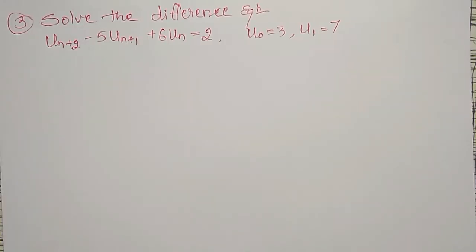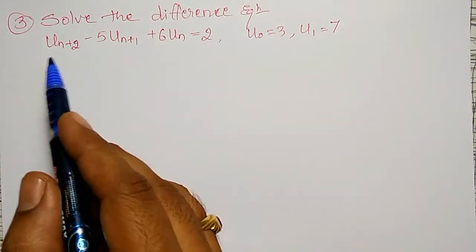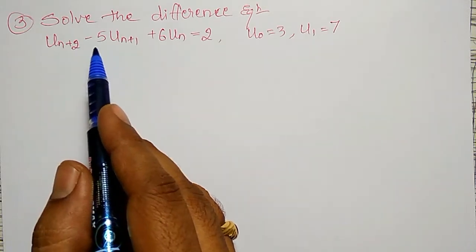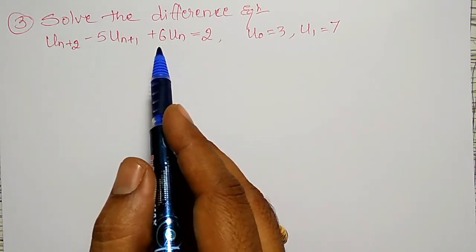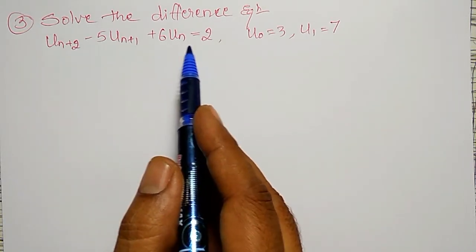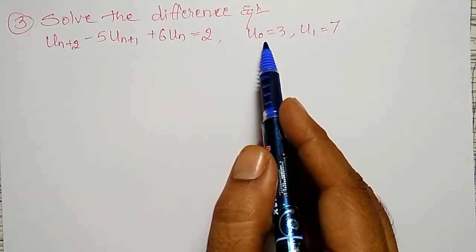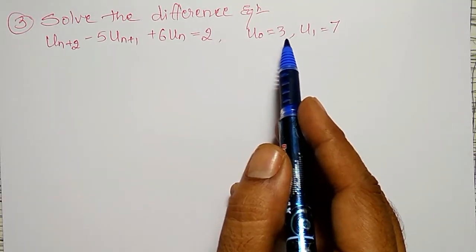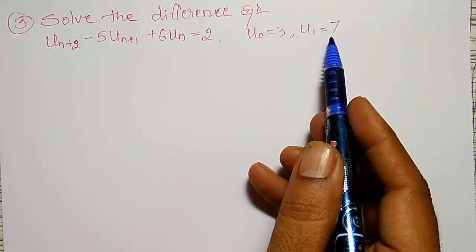In this video, I am going to solve the difference equation u(n+2) minus 5u(n+1) plus 6u(n) equal to 2, with initial values u(0) equal to 3 and u(1) equal to 7.